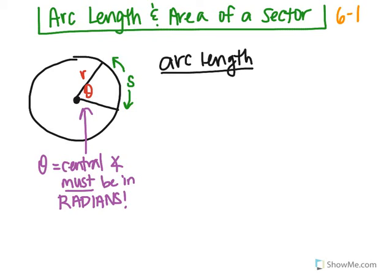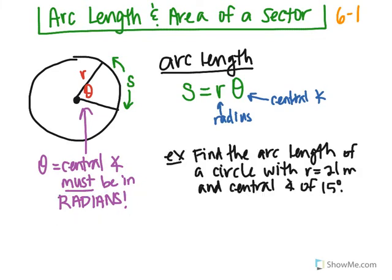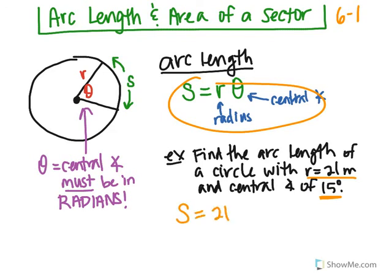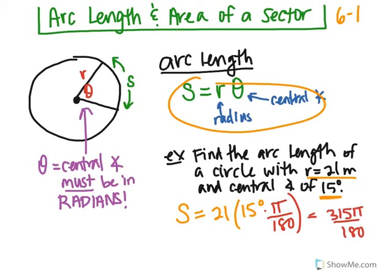The formula for arc length S is: S equals the radius times the central angle — S equals R times theta — where theta must be in radians. In this example, find the arc length of a circle with radius 21 meters and a central angle of 15 degrees. Arc length equals 21 times 15 degrees converted to radians by multiplying by pi over 180. Multiply top to top and bottom to bottom: 21 times 15 gives 315 over 180, which reduces to 7pi over 4. So the arc length is 7pi over 4 meters.